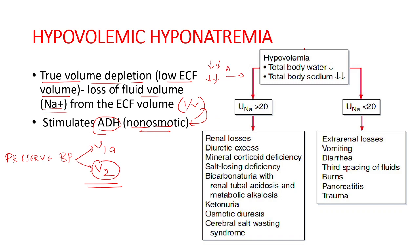This results in a state where total body water is decreased but total body sodium is much more decreased relative to water, leading to hyponatremia in the setting of hypovolemia. Based on urine sodium, the causes can be divided: urine sodium less than 20 mmol suggests extra-renal causes, while urine sodium greater than 20 mmol suggests renal causes.